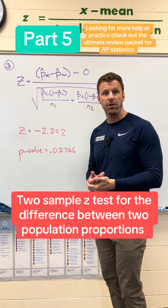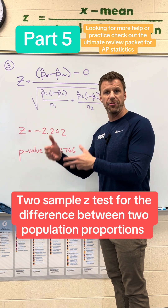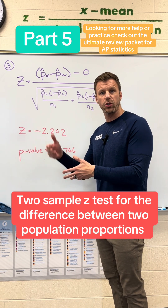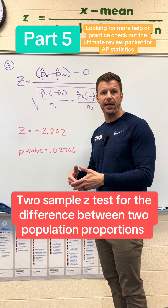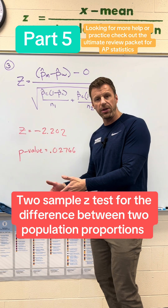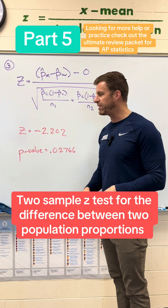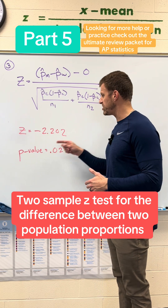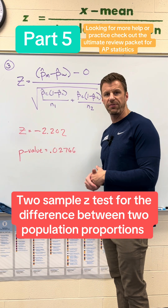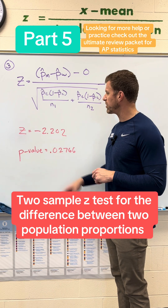All you have to enter into the calculator is the data: the number of men who have a college degree — 60 — and the sample size of 200, and the number of women who had a college degree — 100 — and the sample size of 250. Then you'll get your z-score and your p-value.